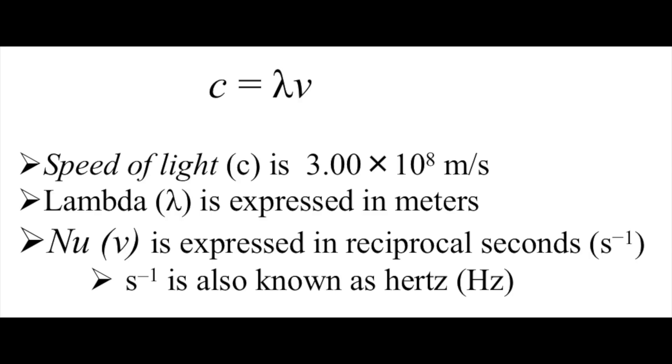Light is also characterized by its frequency, which is denoted by nu, which is the number of wave crests that passes through a single point per second. The unit of frequency is inverse seconds, or it is also more commonly referred to as a hertz.